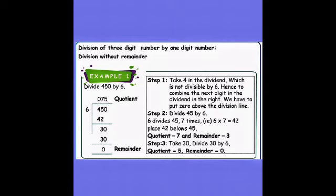That 5 should be written at the top in the quotient portion. So 5 × 6 = 30, remainder is 0. Therefore quotient is equal to 75 and remainder is 0.